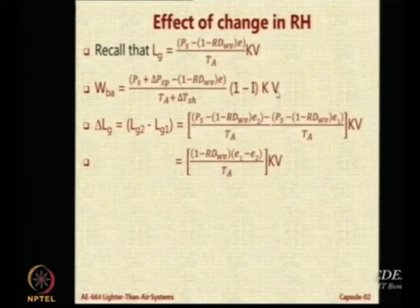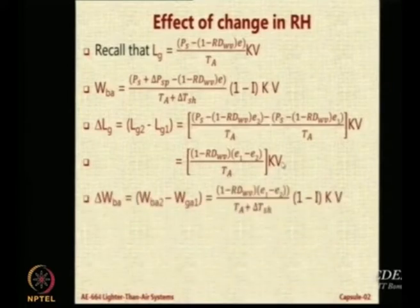Remember it is not E2 minus E1 because the minus sign is taken care by changing. The ambient temperature remains the same. We assume that there is no change in any other parameter and volume also remains the same externally. So the change in the ballonet air also will be correspondingly obtained as 1 minus RDwv E1 minus E2 into 1 minus I KV by Ta plus T sh.